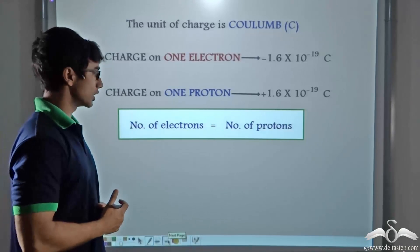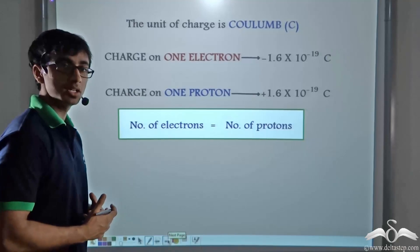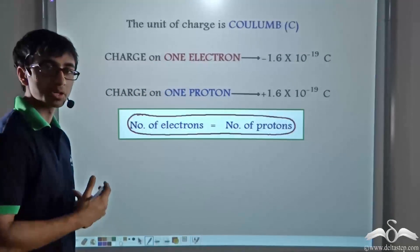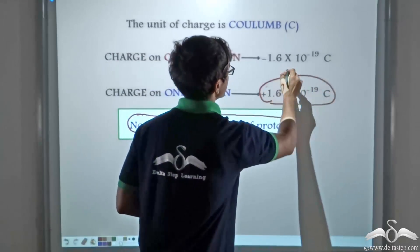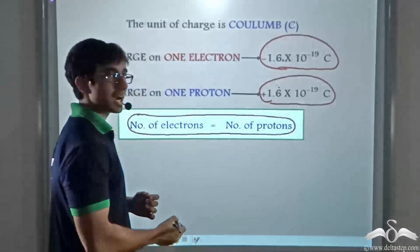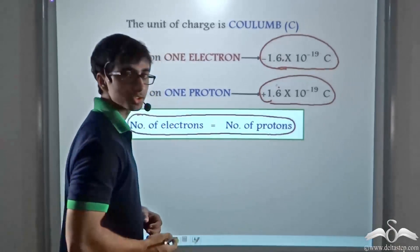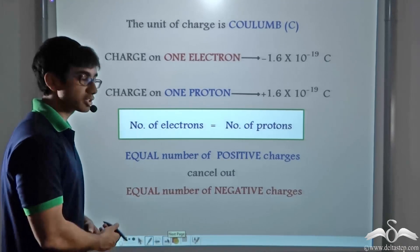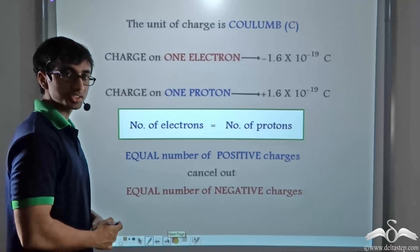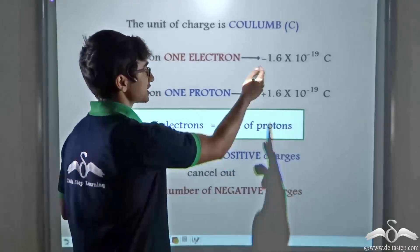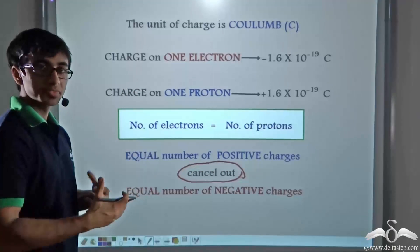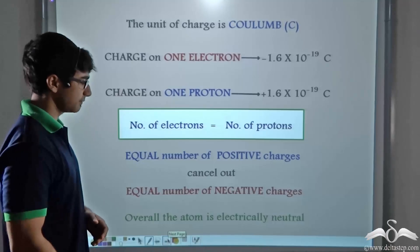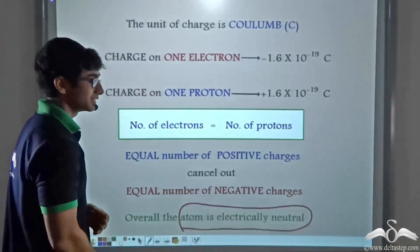It has also been experimentally found that the number of electrons in an atom is always equal to the number of protons. This is why an atom is a stable unit. Since the charge on an electron and the charge on a proton are the same in magnitude, and the numbers are equal, they cancel out. So overall, the atom is electrically neutral because the positive and negative charges cancel one another out.